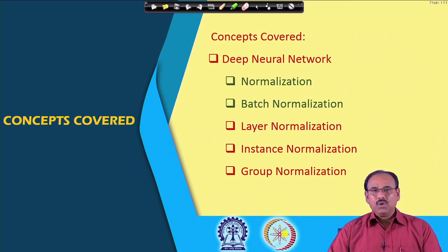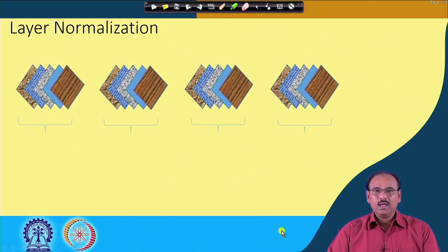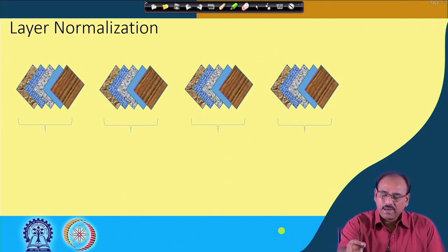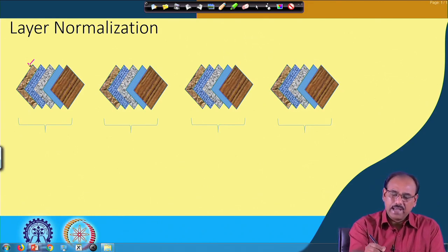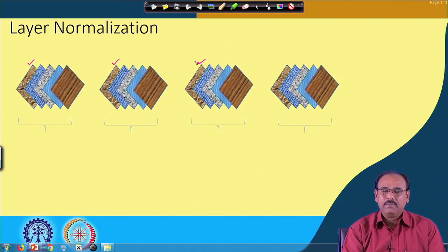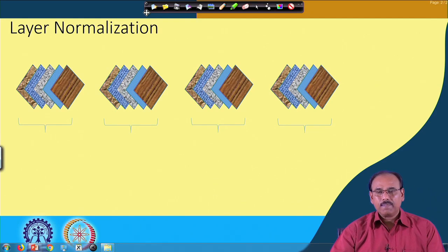These problems are addressed by layer normalization and instance normalization. In batch normalization, you take a feature from one batch, the identical feature from another batch, and so on, computing mean and standard deviation across those feature maps. Whereas in layer normalization, you take the feature maps computed by different convolution kernels over a single training example.